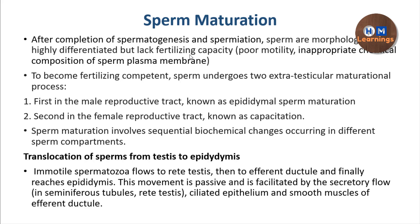One may wonder: if the sperm is not motile, how does it reach the epididymis? From the seminiferous tubules, there is a passive flow — secretions drag the sperm with them to the rete testis, and from the rete testis further secretions carry the sperm into the efferent ductules. In the efferent ductules, smooth muscles and ciliated epithelium, along with secretory flow, push the sperm into the epididymis. So even without motility, the sperm passively flows from the seminiferous tubule to the epididymis.